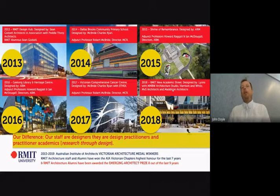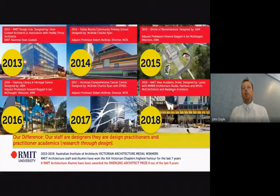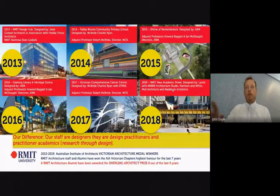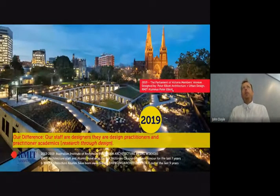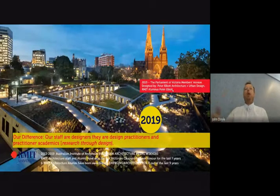To give an example of graduate outcomes, certainly in Australia and largely internationally, a lot of our graduates have had very significant careers. Six of the last eight gold medal buildings of the year in Victoria have been won by alumni of our school, including a number of buildings we occupy as part of our campus. In 2019, a building designed by RMIT alumnus Peter Elliott won the Victorian gold medal and the national award as well.